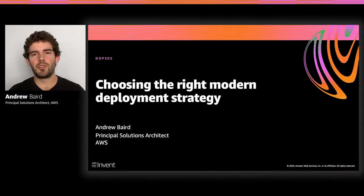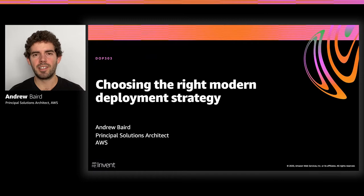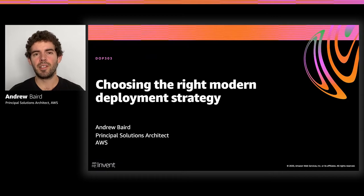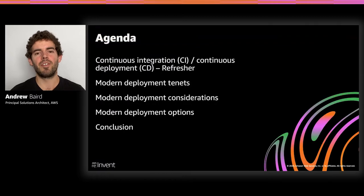Hey everybody. My name is Andrew Baird. I'm a Principal Solutions Architect with AWS, and welcome to DevOps 303, where we're going to talk about how to choose the right modern deployment strategy. It's a topic I'm really passionate about. We're going to cover all sorts of different deployment mechanics and options you have on AWS, regardless of the compute service your application has been deployed to. So let's jump in. We've got 30 minutes.